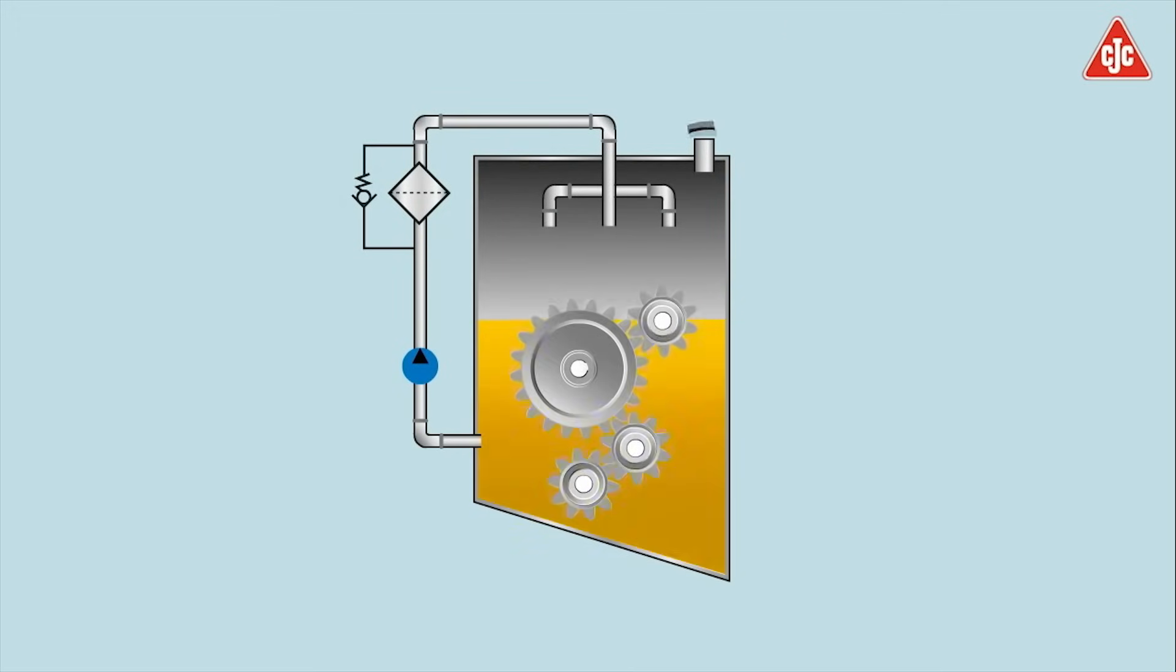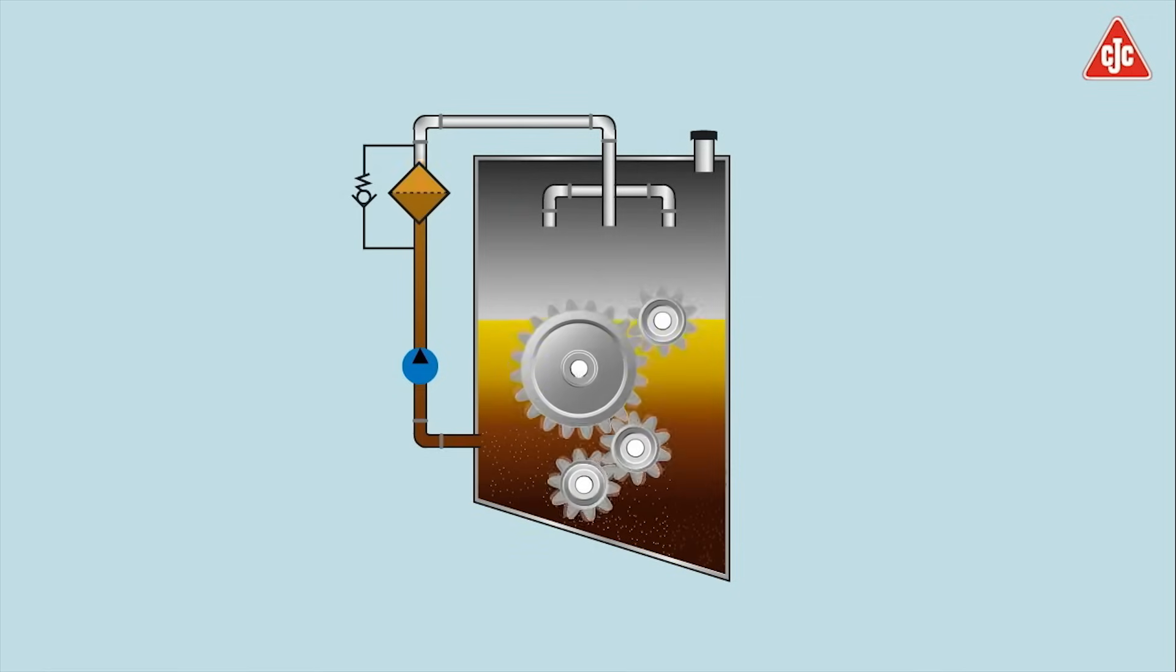New oil is filled into the system. During the operation, particles, water and oil degradation products are produced continuously as the oil is in contact with the moving parts. We see that the oil color changes from bright clean to dark contaminated oil, damaging the system components.